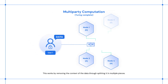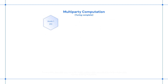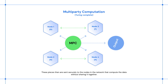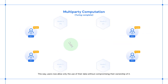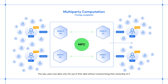This works by removing the context of the data through splitting it into multiple pieces. These pieces are then sent securely to the nodes in the network, which compute the data without sharing it together. This way, users allow only the use of their data without compromising their ownership of it.